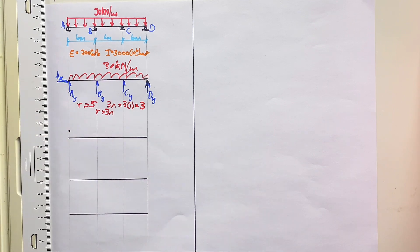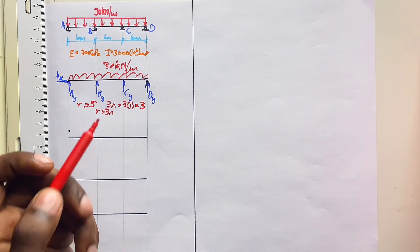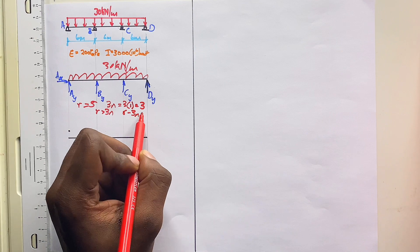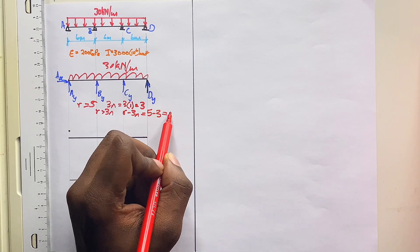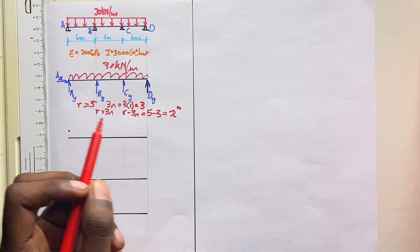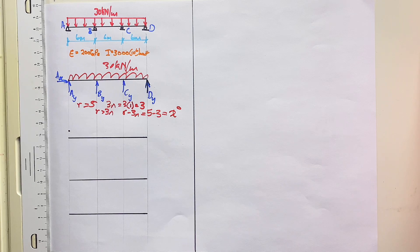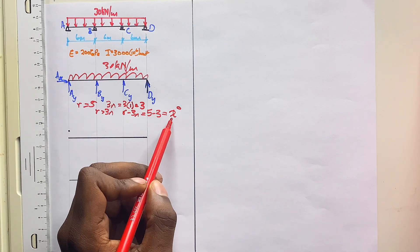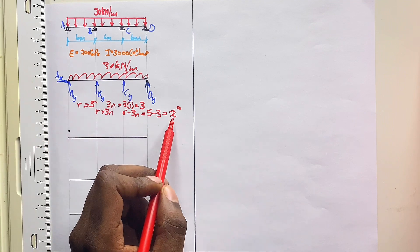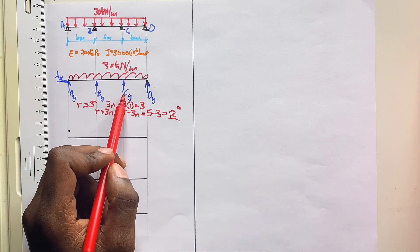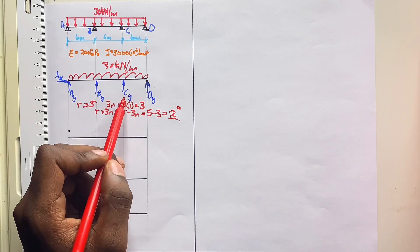Our structure is statically indeterminate. We have to find the degree of indeterminacy: 5 minus 3 equals 2, so it is indeterminate to the second degree. This means we have two extra forces for static stability, so we are going to declare two support reactions as our redundants. In this example, I'm going to choose B and C.